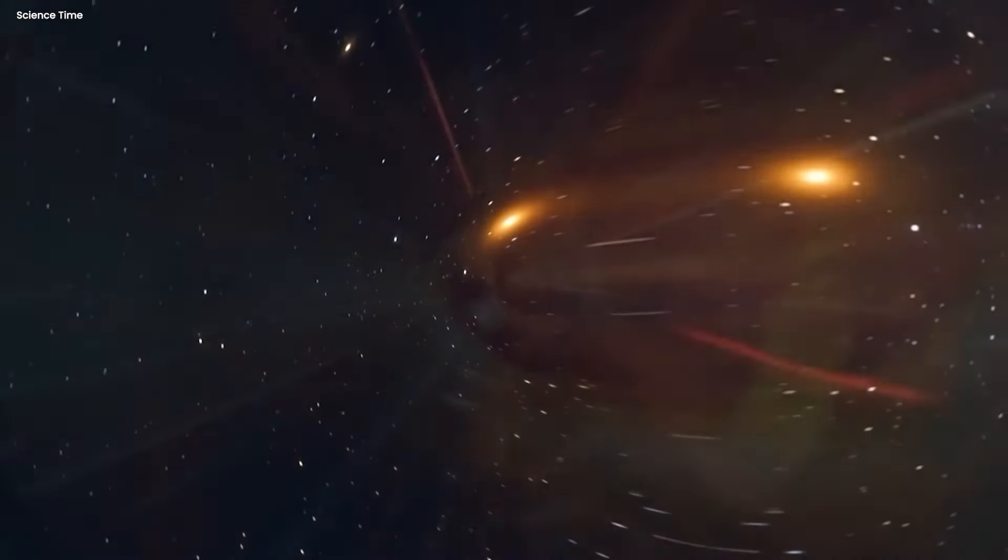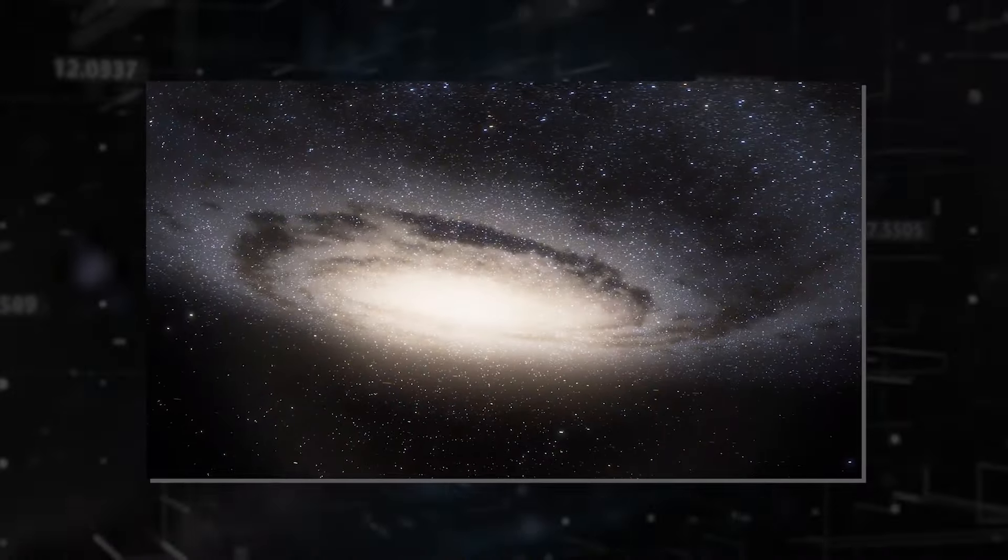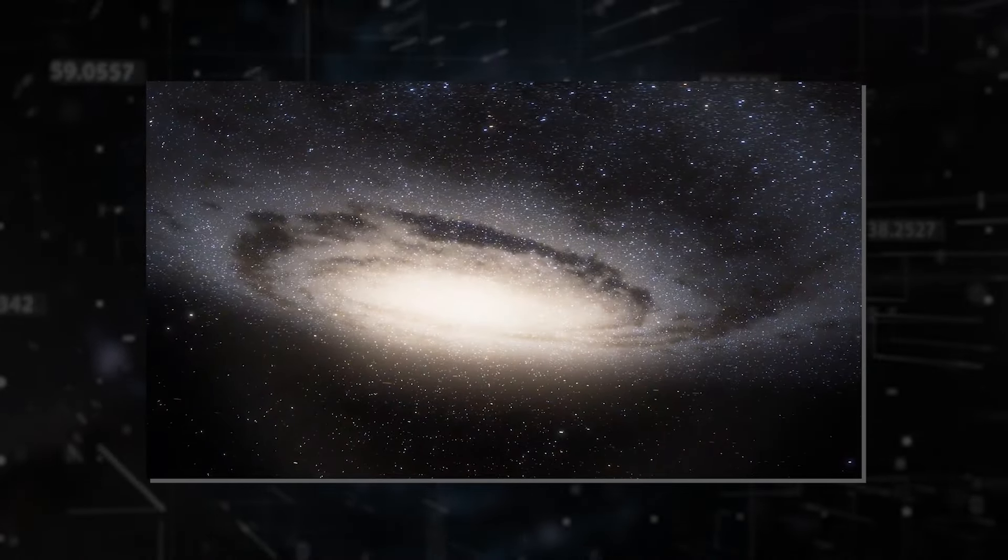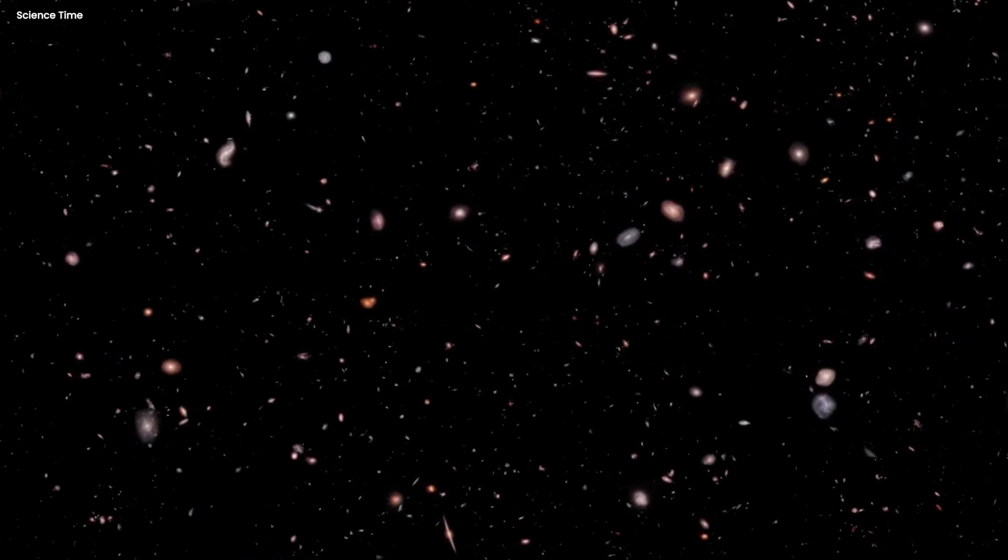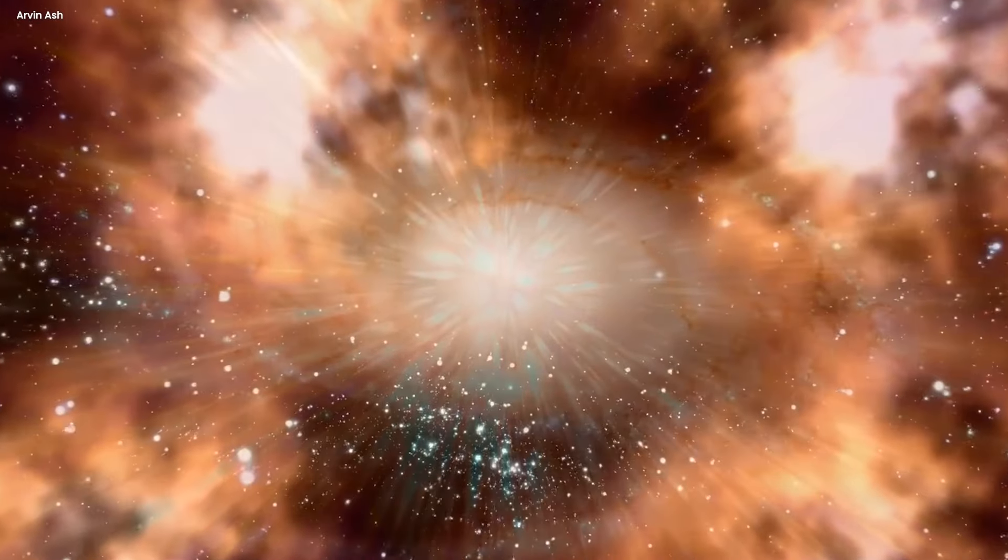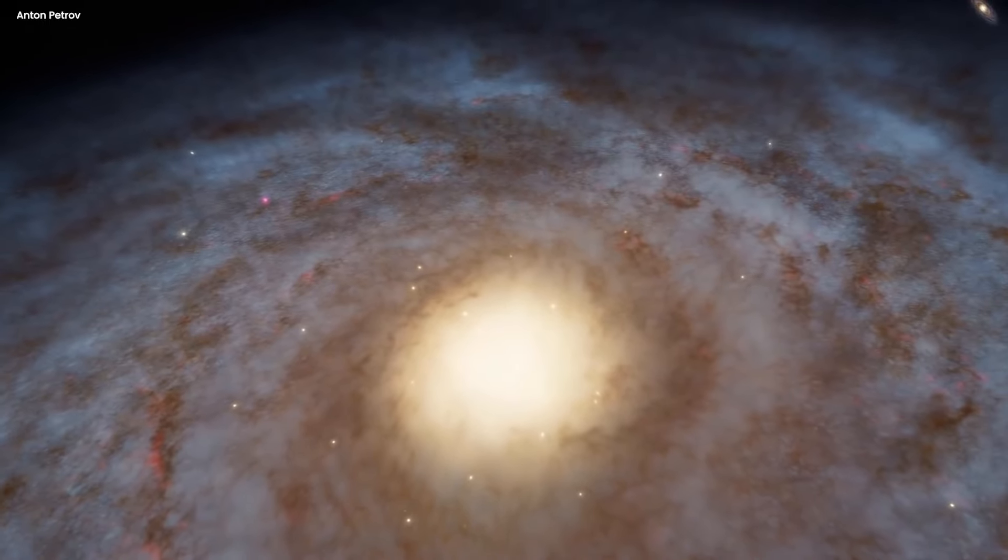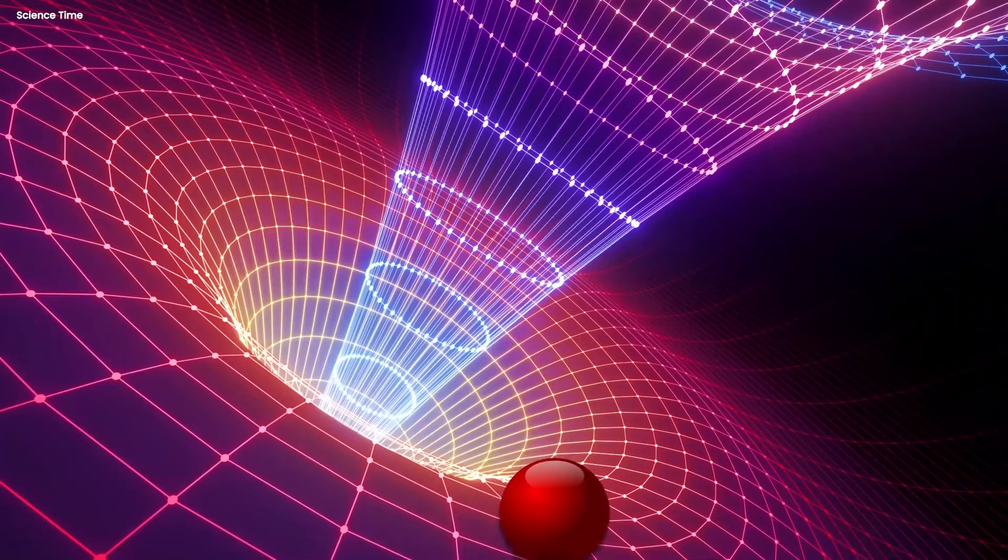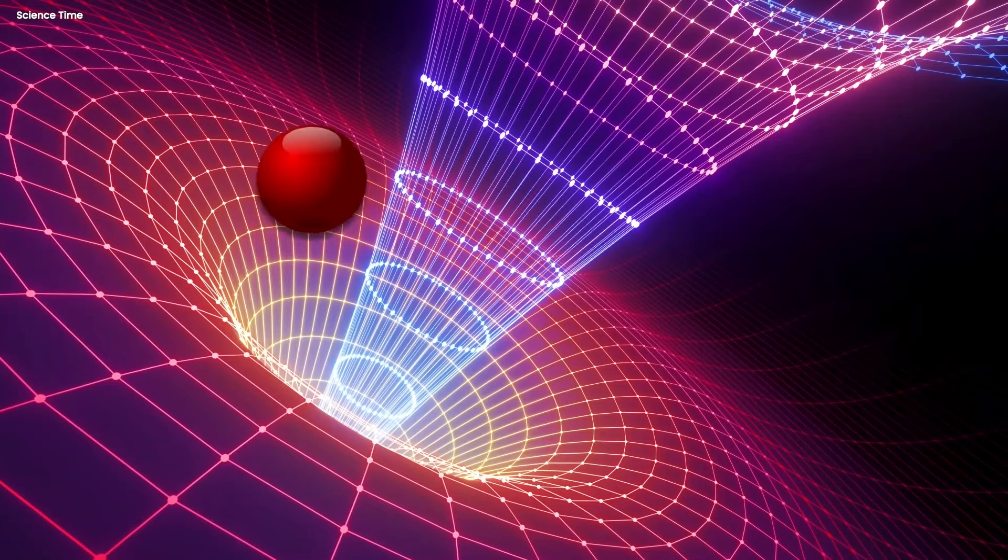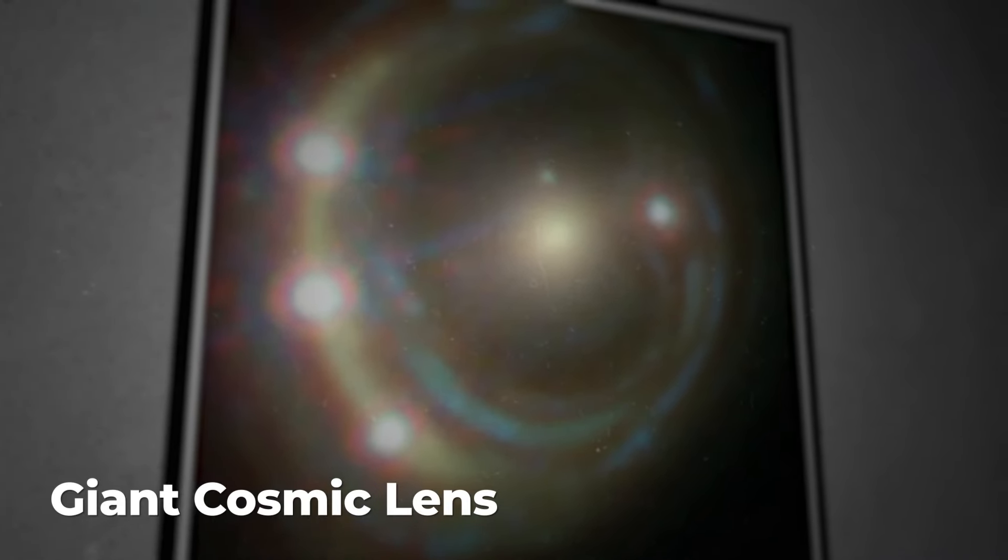This same phenomenon can even happen on much larger scales, not just with individual galaxies, but with entire clusters of galaxies. The gravity of a nearby cluster can warp the light coming from galaxies way beyond it. The visual signature isn't as dramatic as a perfect Einstein ring, or as fun as a smiling face, but astronomers can still detect these faint, distorted arcs of light from distant galaxies. It's all thanks to the bending power of gravity, acting like a giant cosmic lens across the universe.